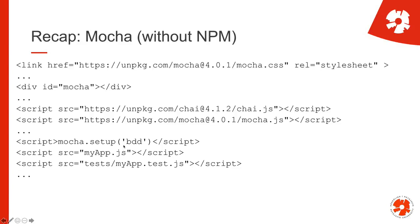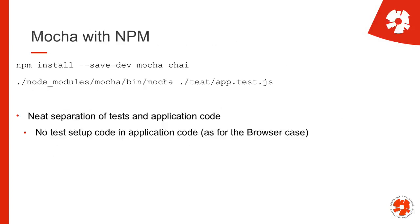To recap: when we did not use Node and NPM, we used Mocha through the browser. We included our JavaScript files with a script tag, and to run Mocha we also had to include Mocha itself, the Chai and Mocha libraries, set up Mocha, and include the test file. With NPM this is getting much easier — we simply use NPM to install Mocha and Chai, and then use the Mocha executable to specifically test a given file.